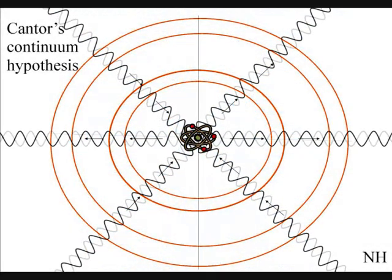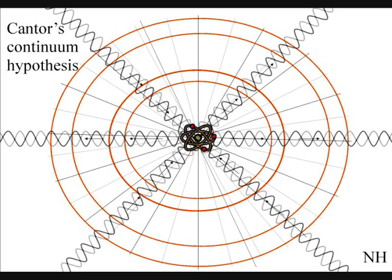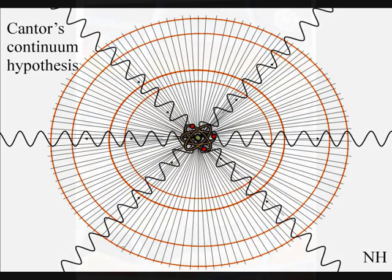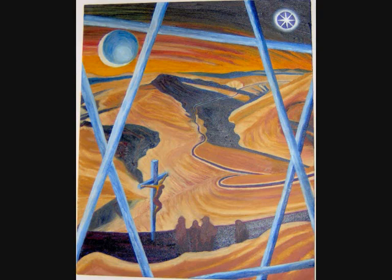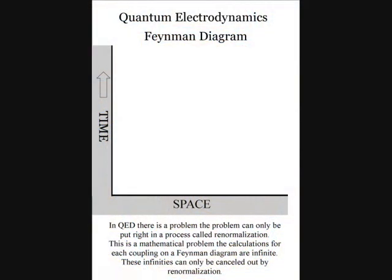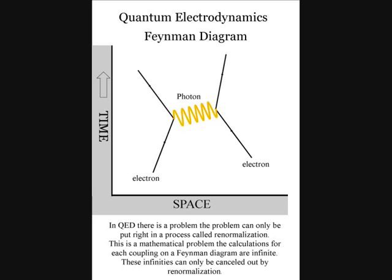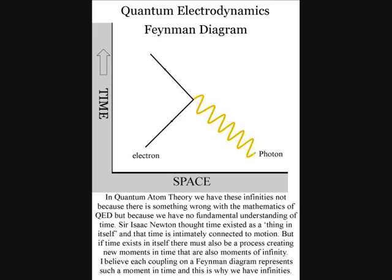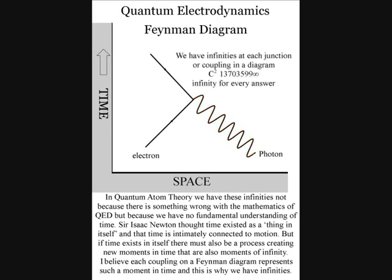In this theory, infinity is not a mathematical paradox, but an actual reality of our universe. Because the wave function collapses into a moment in time, and also into a quantum particle, we have the infinity of time and space. This can explain the mathematical problems of quantum electrodynamics. At every junction or coupling on a Feynman diagram, the calculations are infinite. These infinities can only be cancelled out by a process called renormalization. I believe we have these infinities not because there is something wrong with the mathematics of quantum electrodynamics, but because we have no fundamental understanding of time.